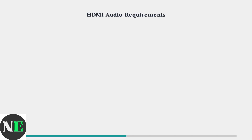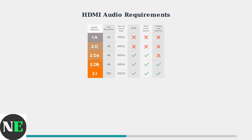HDMI audio problems are among the most common Steam Deck OLED issues. The first step is ensuring your HDMI cable supports audio transmission — your cable must be version 1.4 or higher, as HDMI 1.4 and above include dedicated audio channels that allow sound to travel alongside video data.